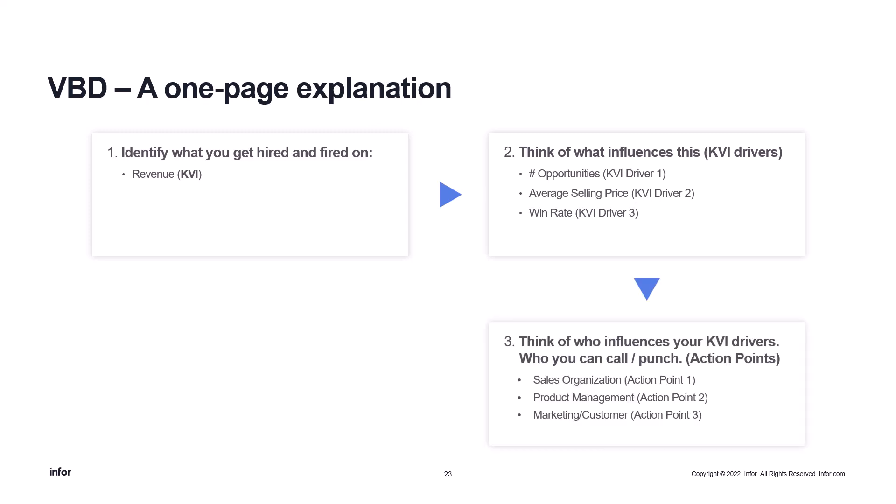Then we move on to the action points — if I need a change in one of the drivers, who do I call? If I want more opportunities, it is the sales organization that's responsible. If I want a change in the average selling price, product management is the place to go. And if we want to increase our win rate, maybe marketing can do something about that. With our four measures — the KVI and the KVI drivers — and our four dimensions — the action points and time — we now have a lot of combinations and data to start building our dashboards on.